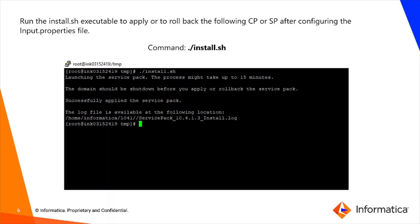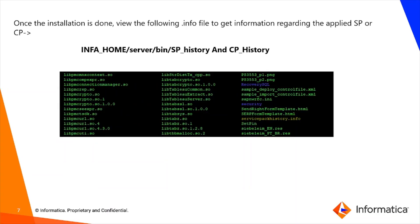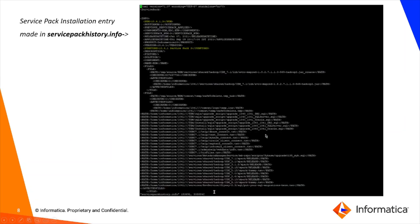Once the installation is done, navigate to the following file path and locate the file called service_pack_history.info. View this file to verify the installation. In the example shown, Service Pack 3 was installed on a 10.4.1 EDC instance, and the corresponding entry has been recorded in the file.